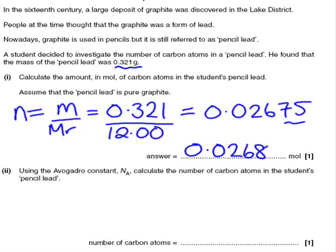Now, for part two, you're supposed to use the figure that you have just calculated. You also need to use the information from the data sheet, that one mole of any substance is 6.02 times 10 to the 23 particles.